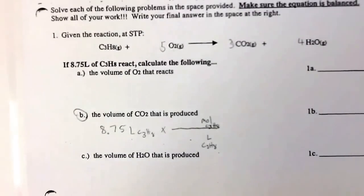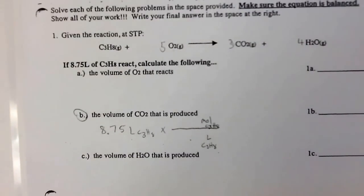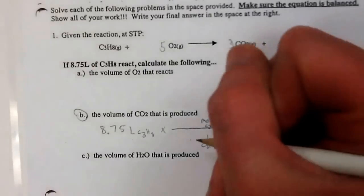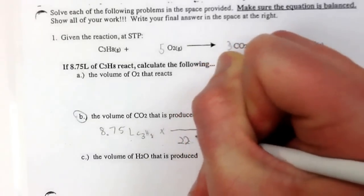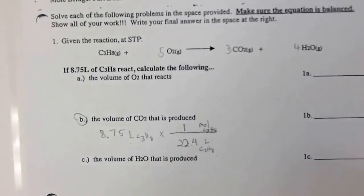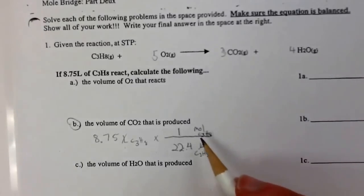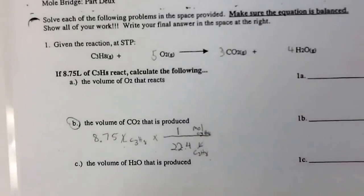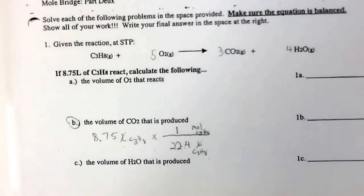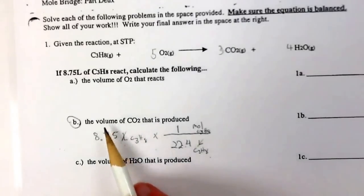So now that I have it this far, I plug in my numbers. So I have 22.4 liters equaling 1 mole. My liters cancel out, and I'm left with moles of C3H8. Now is this where I want to end? Is this my finish? No, I need to get to volume of CO2.